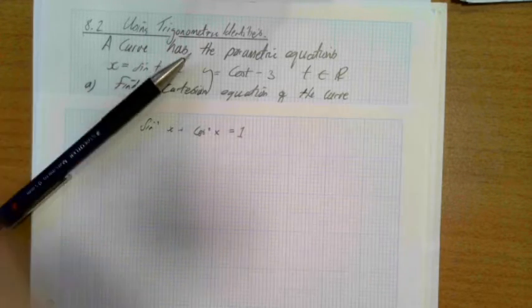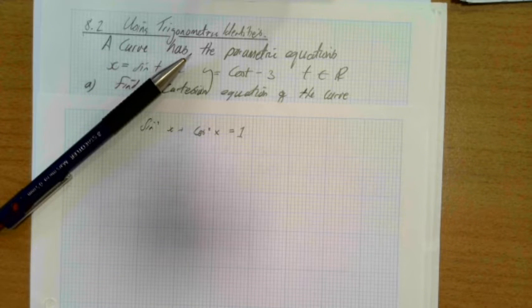And the key for any of these trigonometric identities problems is usually just trying to find an identity you can use. Just like when we normally rearrange to make t the subject and substitute into one of the other equations, we're going to try and make one of the trig functions a subject so we can substitute into an identity.